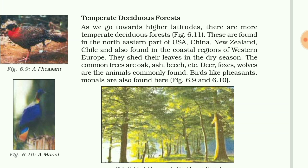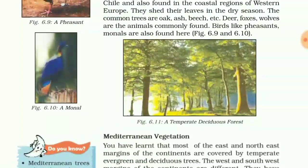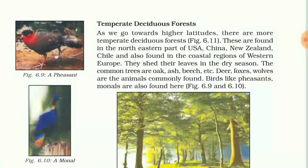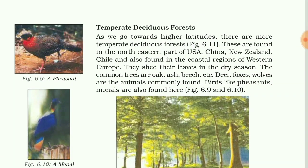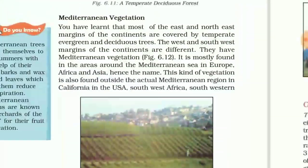Deer, foxes, and wolves are common animals in temperate deciduous forests. Some birds such as pheasants and monals are also found in temperate deciduous forests.